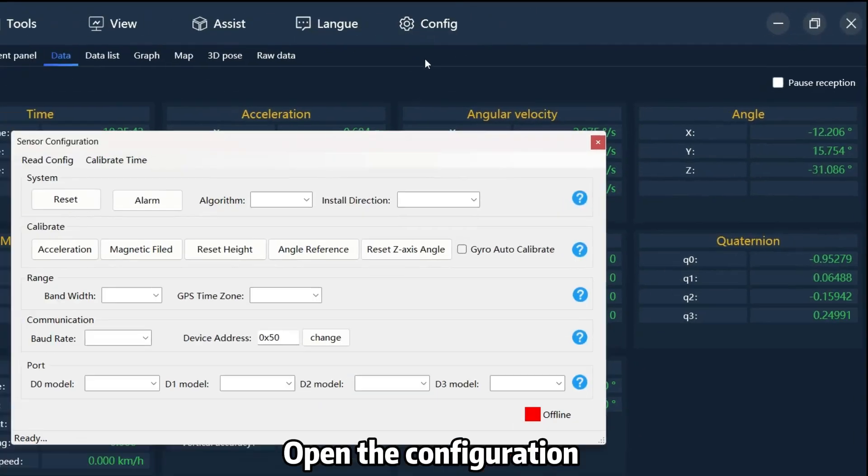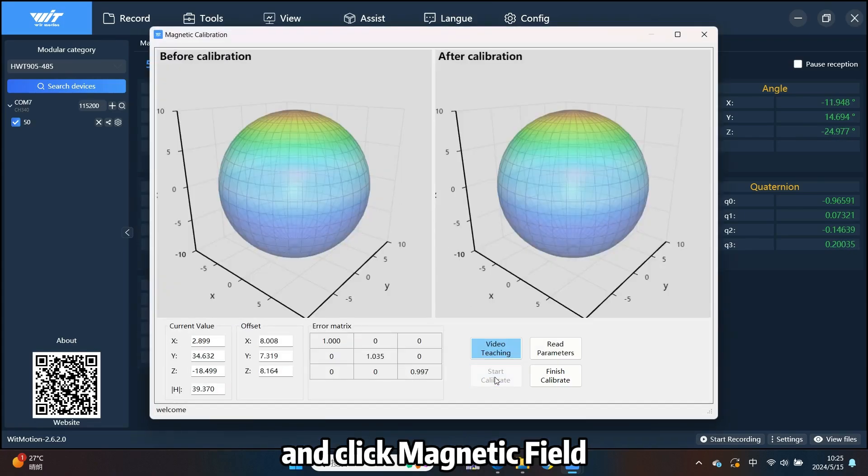Step 3: Open the configuration, slide the port and click Magnetic Field.